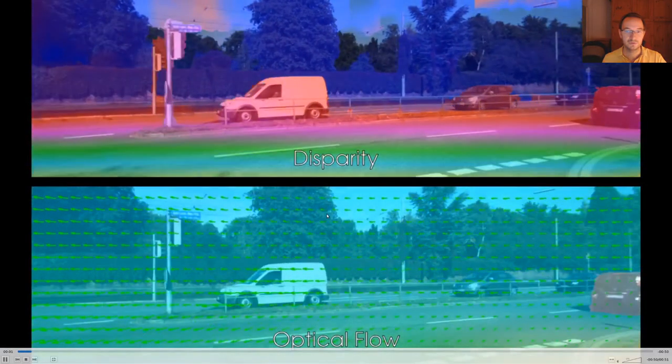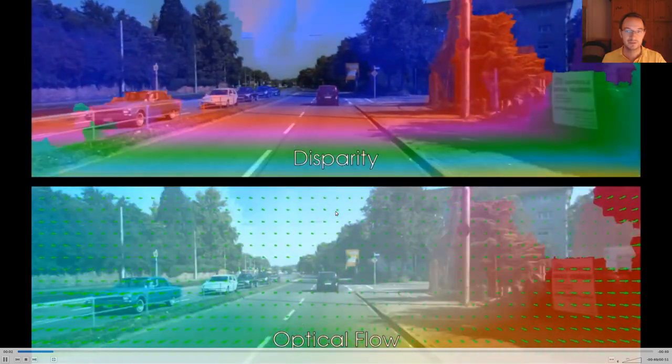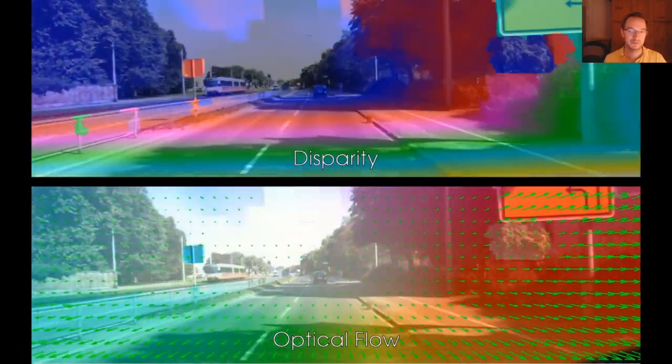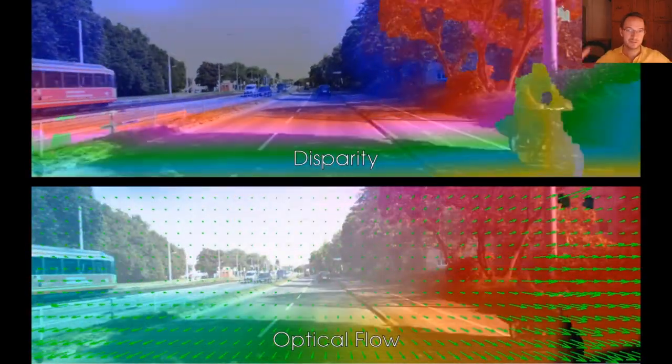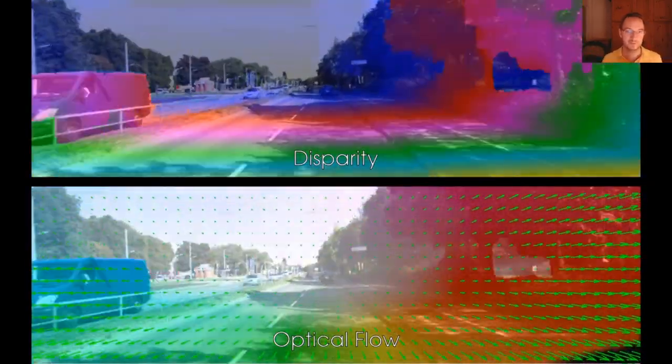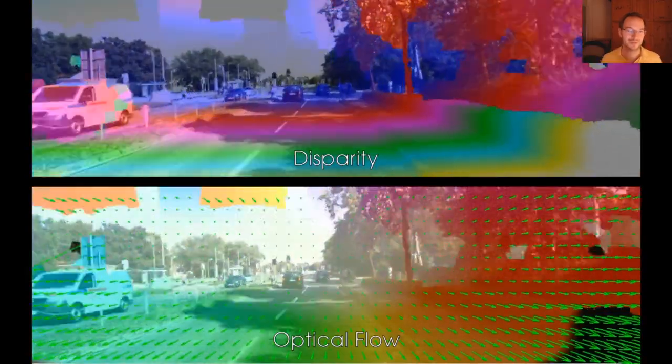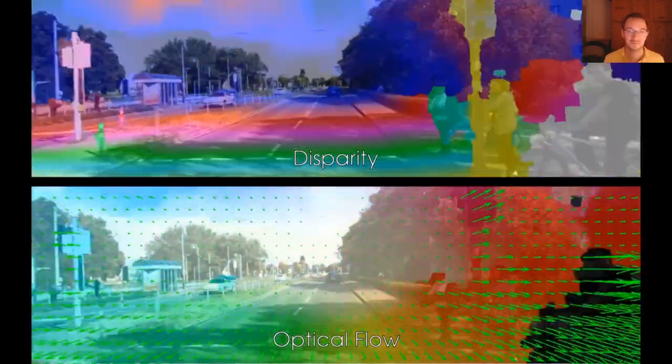And here is one such approach where you can see the jointly inferred disparity map and optical flow field. So there is really, it is really a scene flow estimation algorithm. But we are visualizing the scene flow here because it's hard to visualize a 6D quantity.